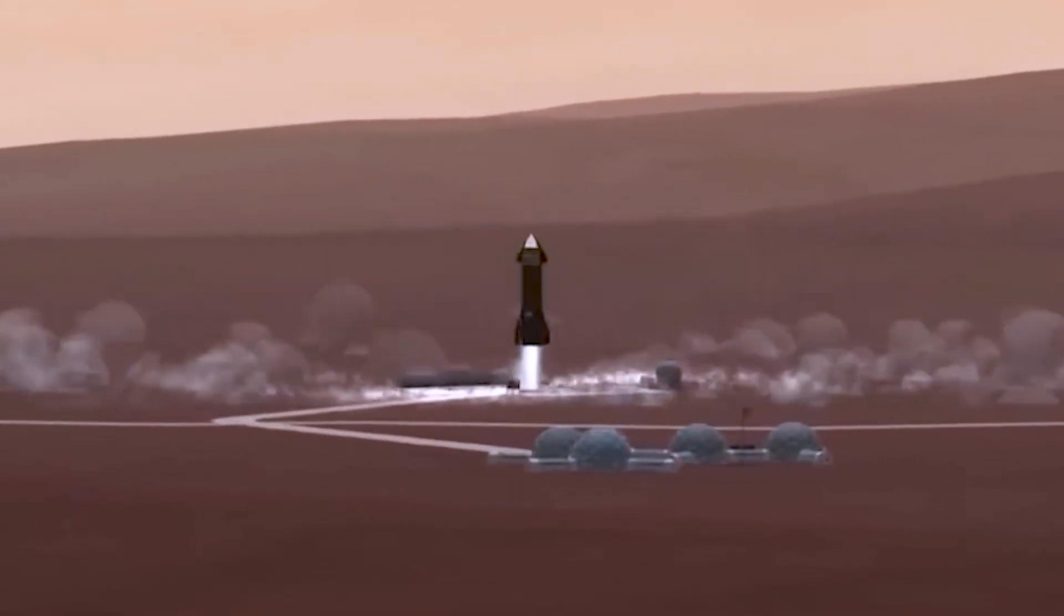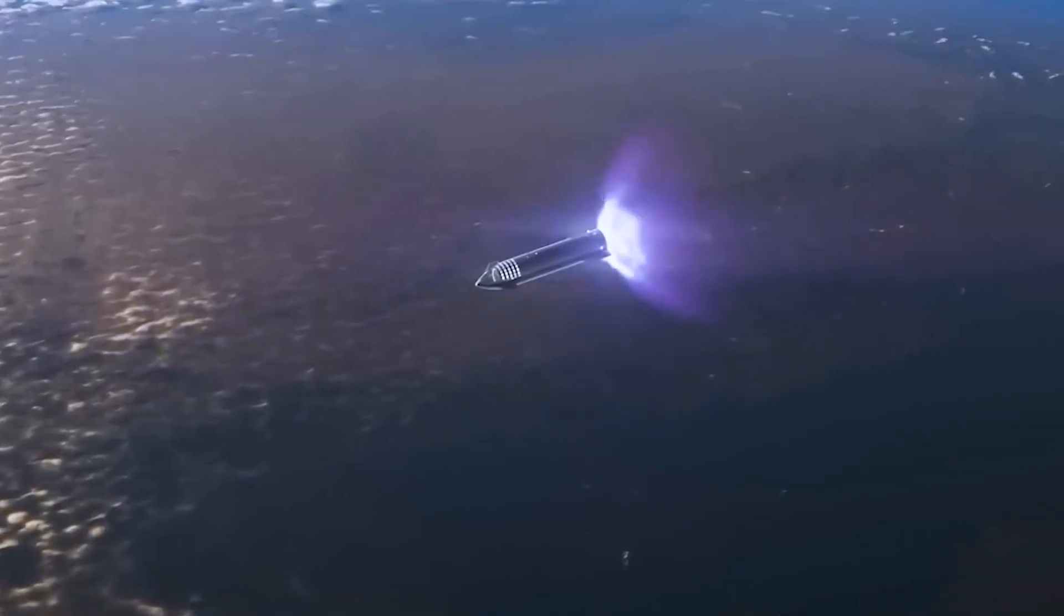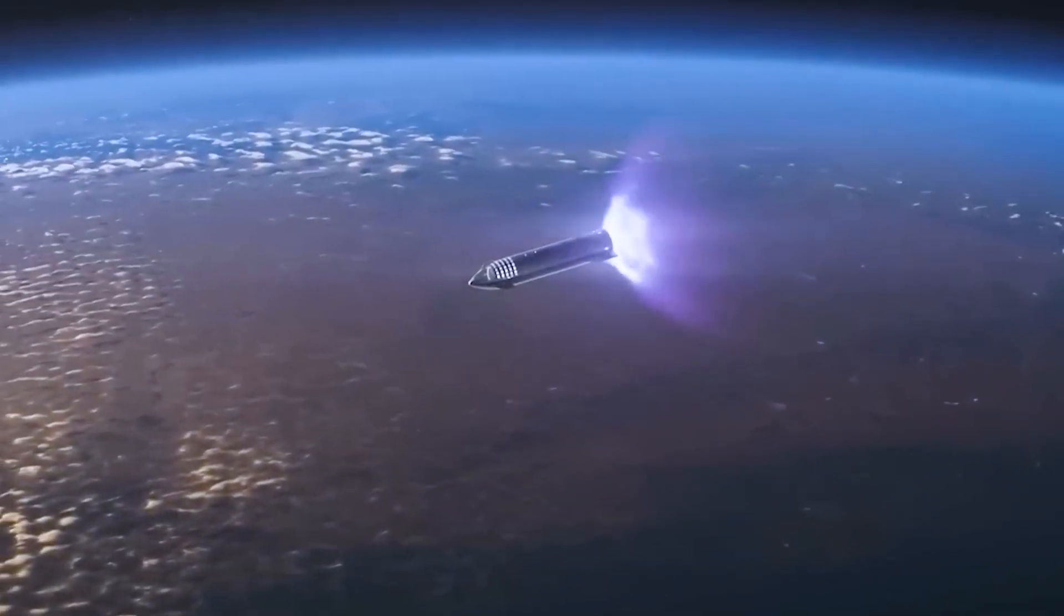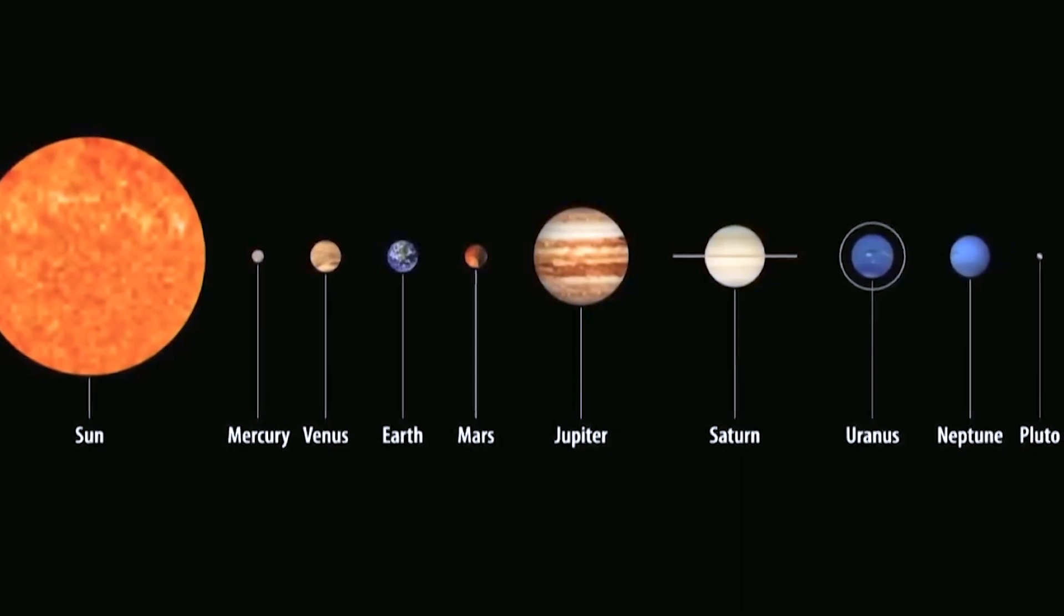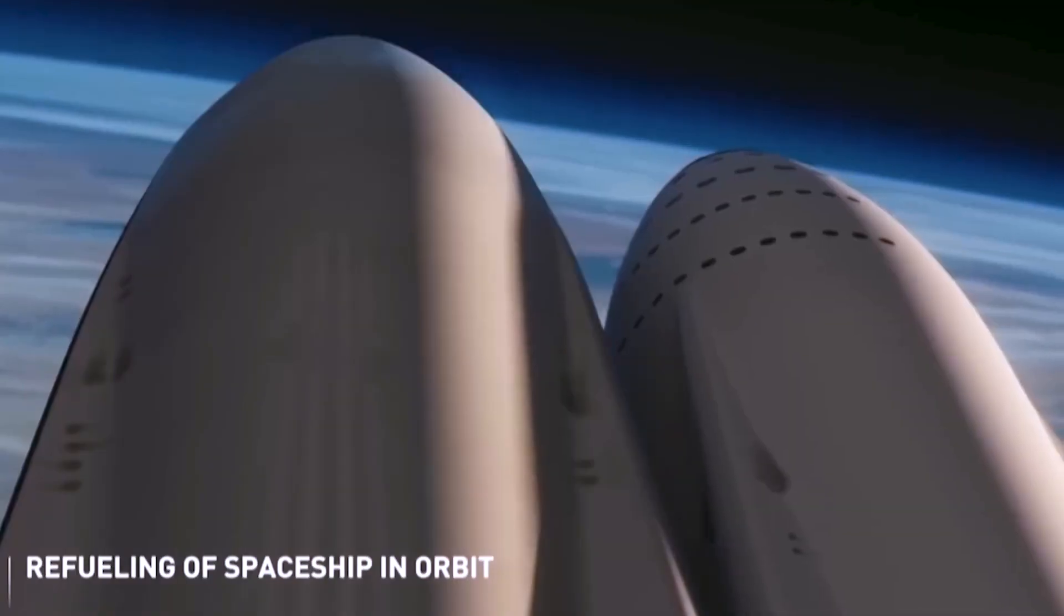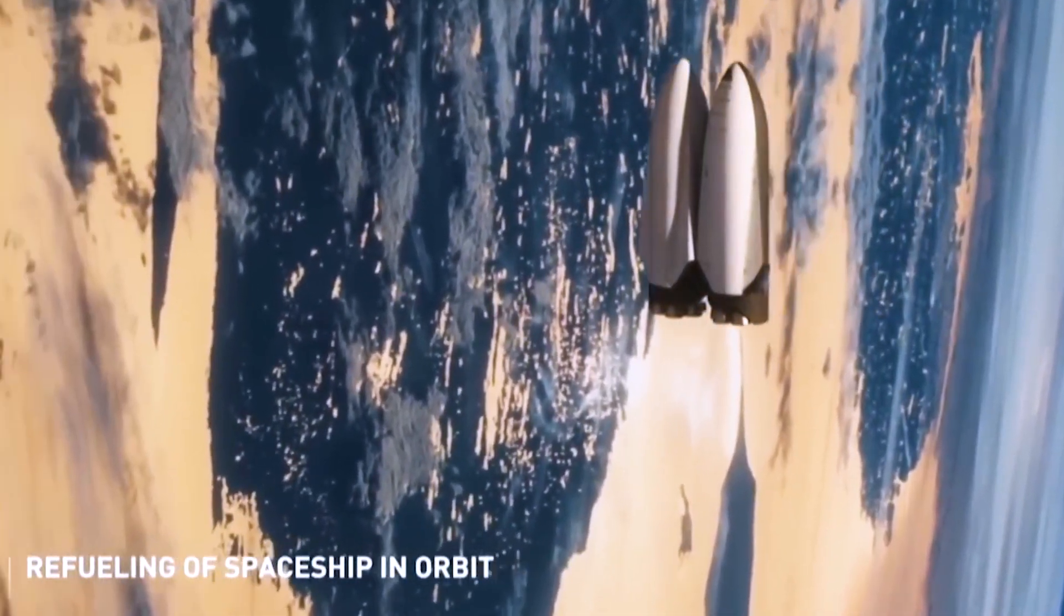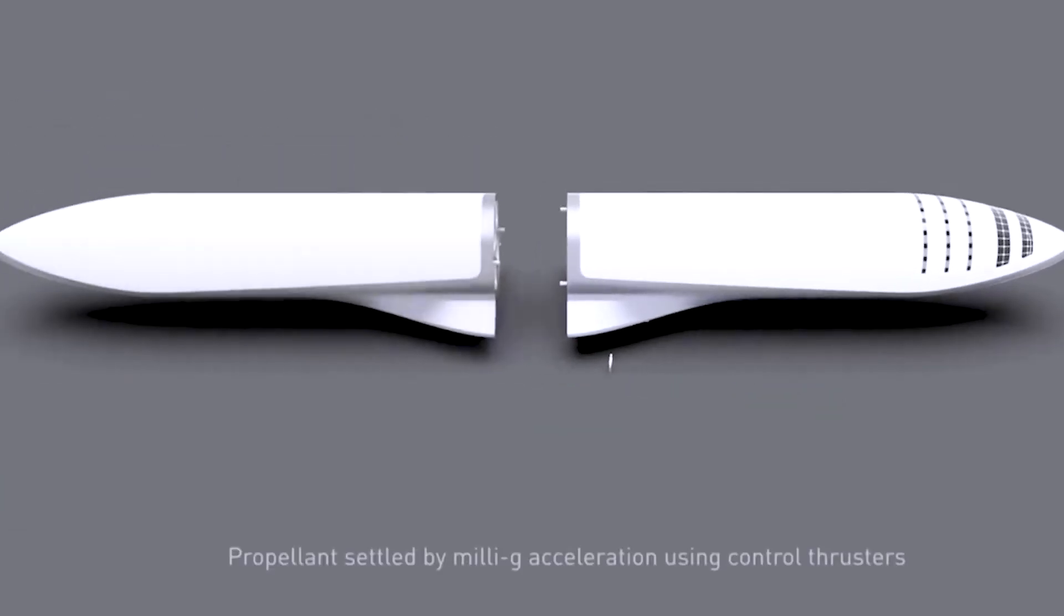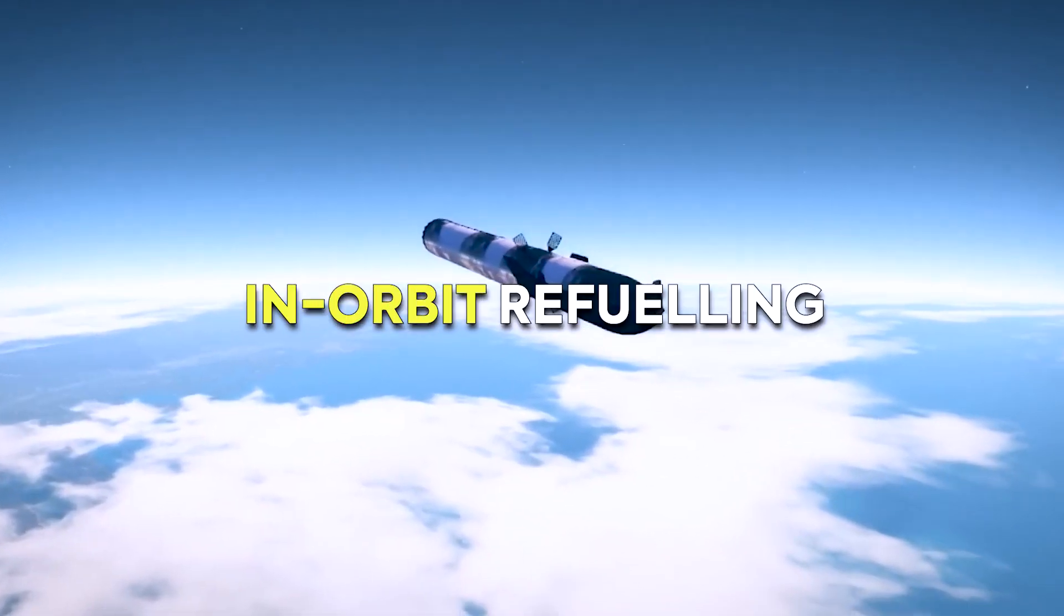This conundrum arises from the fact that for every kilogram of payload carried, an equal amount of fuel is required to lift it into orbit. And yet, that fuel also needs additional fuel to lift the initial amount, leading to an exponential need for an outrageously large rocket just to venture anywhere at all. However, there is a brilliant exception to this predicament: the ability to refuel your rocket while it gracefully glides in orbit. And that is precisely the ingenious plan for Starship's in-orbit refueling.